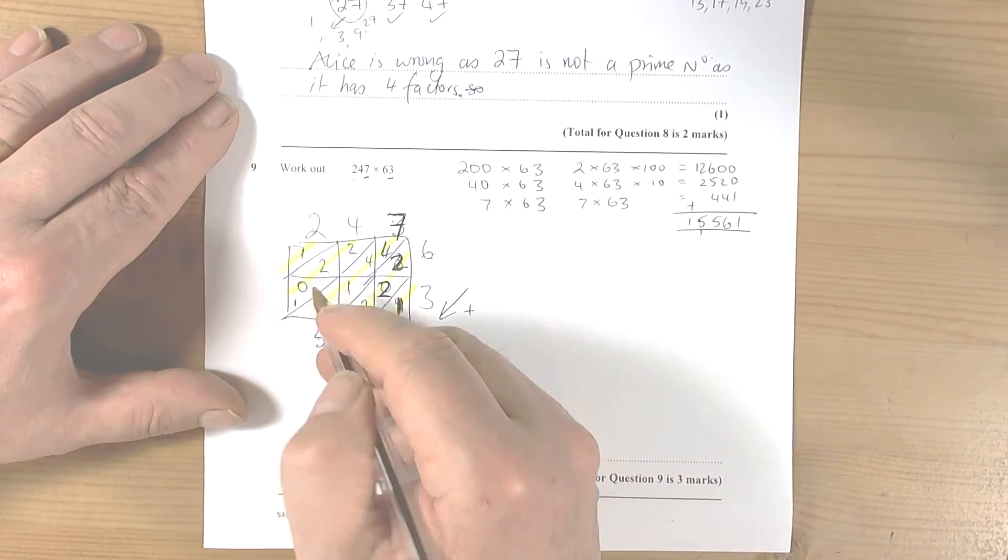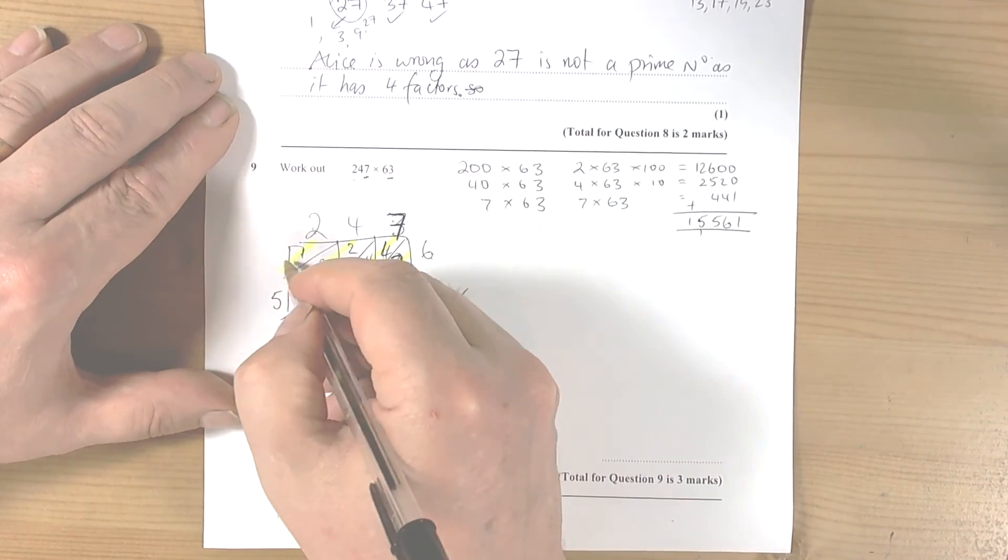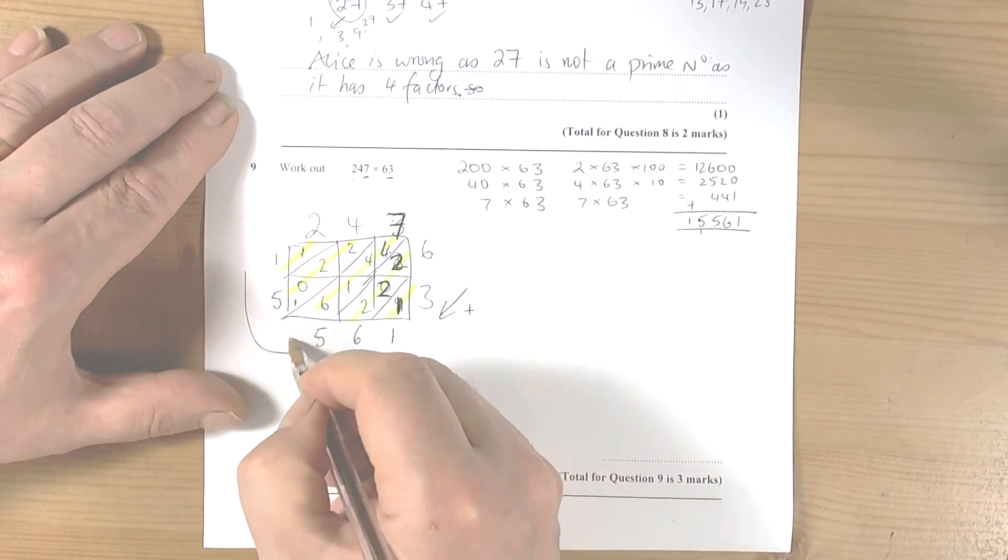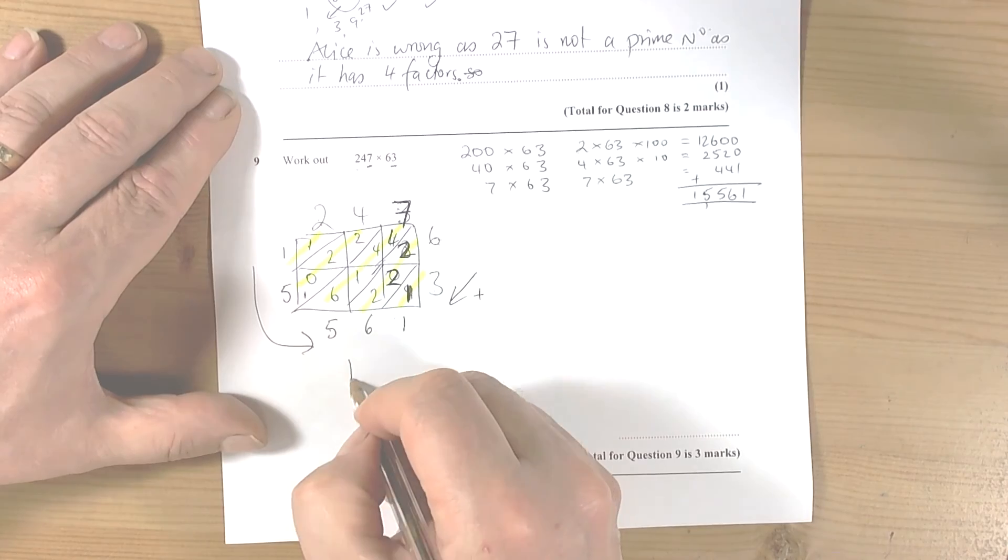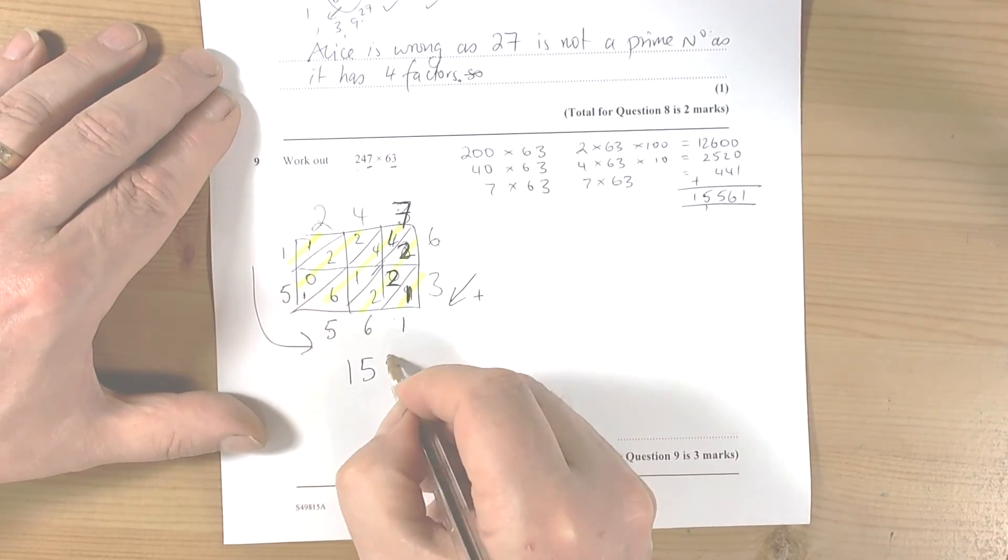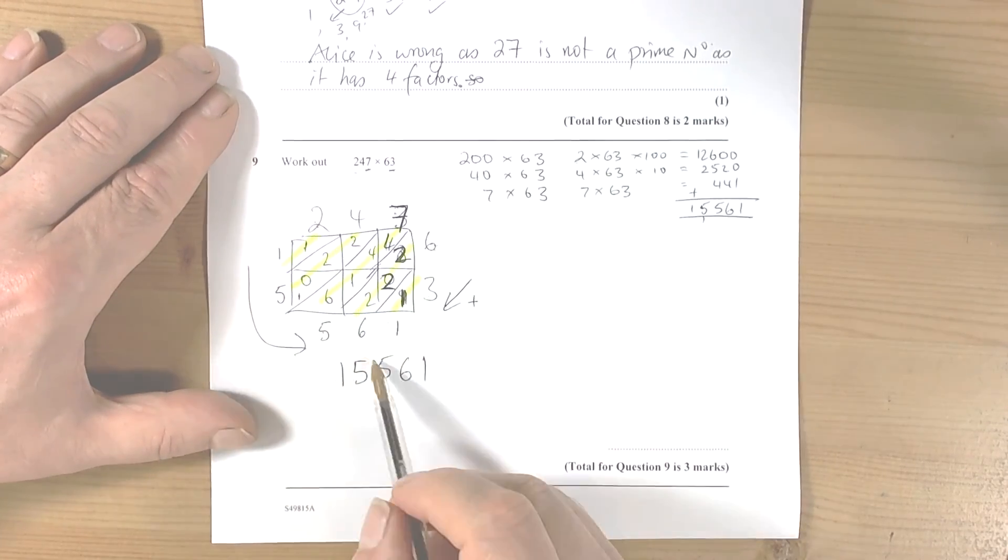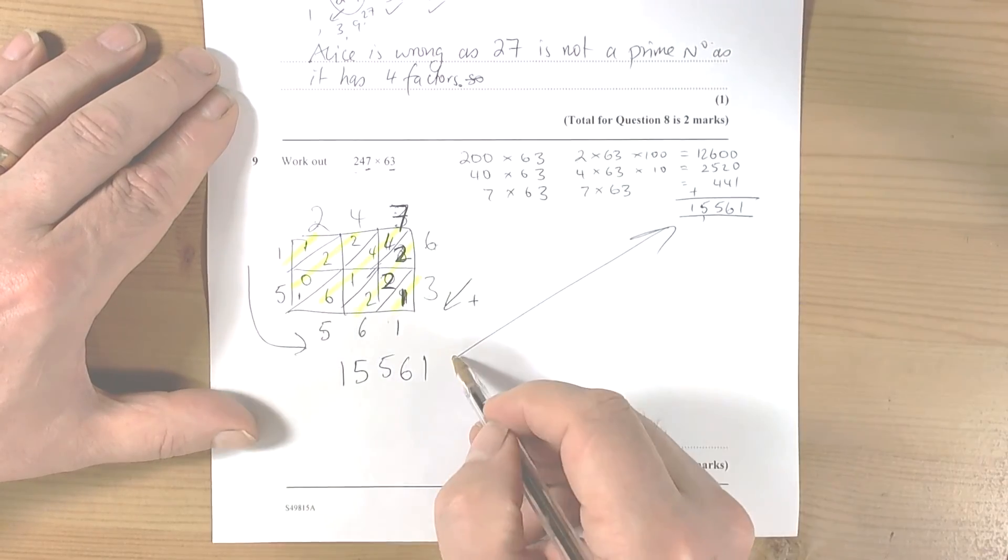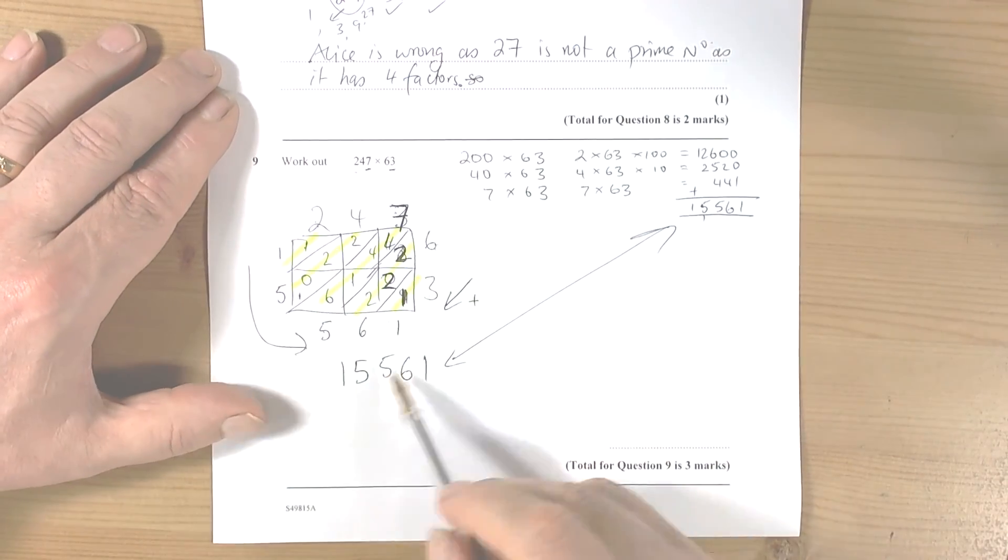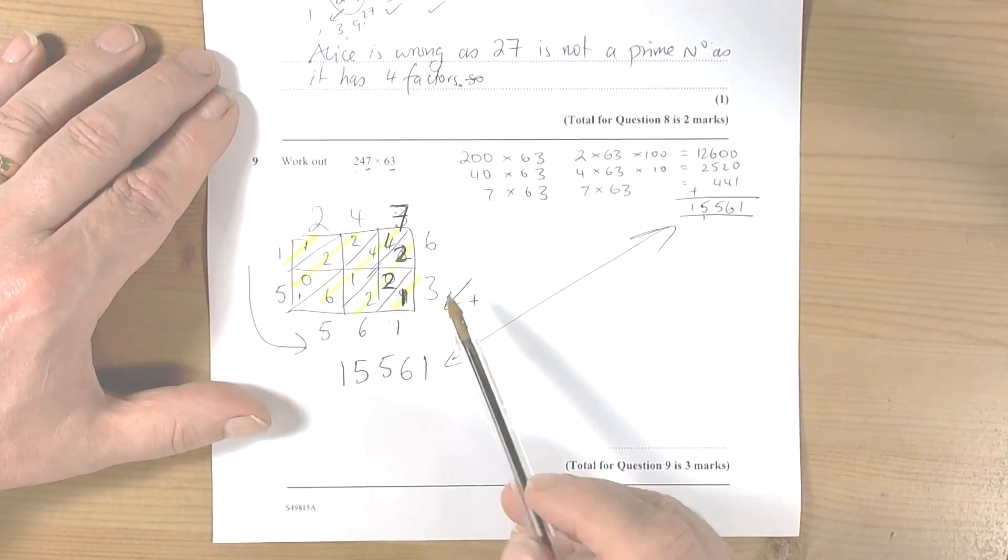So we've got a 2 plus 2 is 4, plus the 1 is 5, and then we've got 1 on its own. So we come around the outside to get the final answer, which is 15,561. And as we can see, the two answers are the same, so either method gave you the same answer.